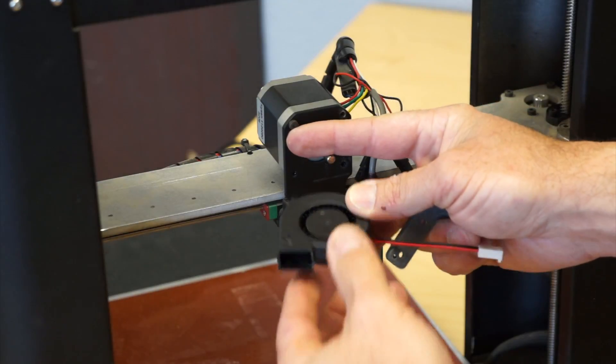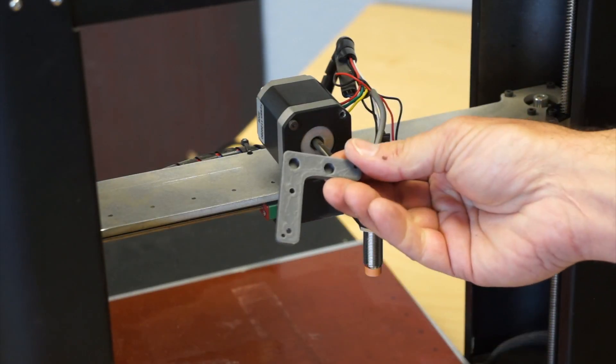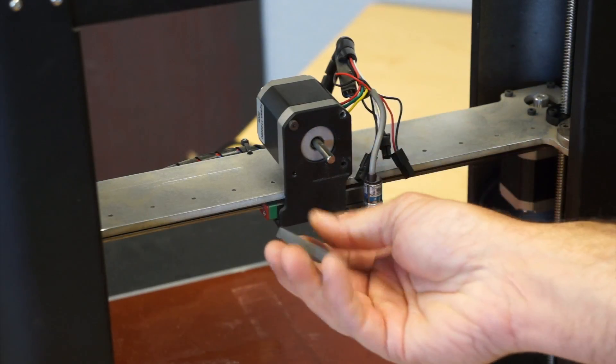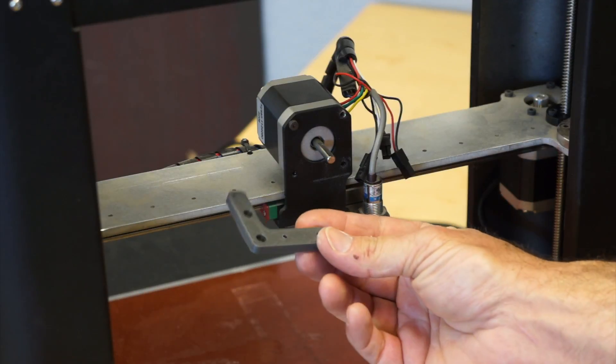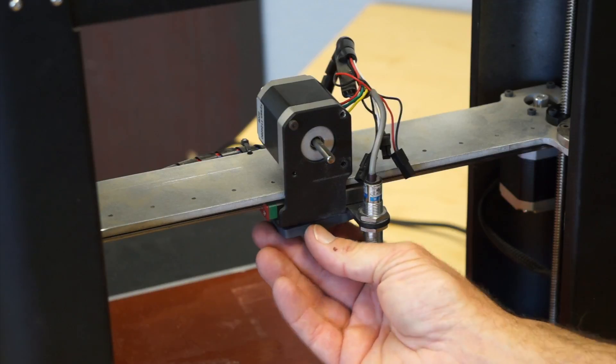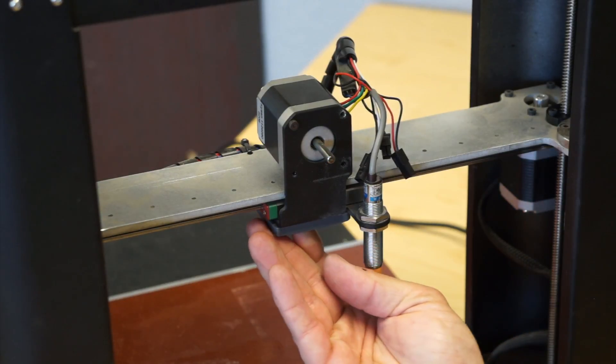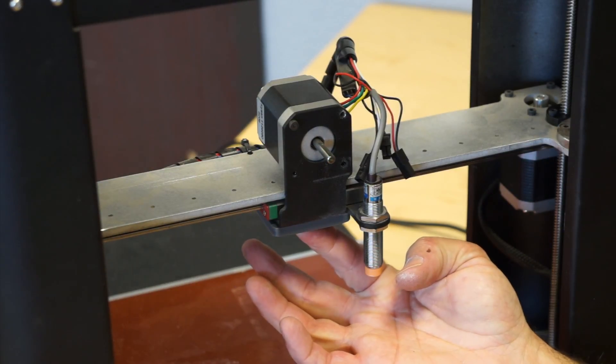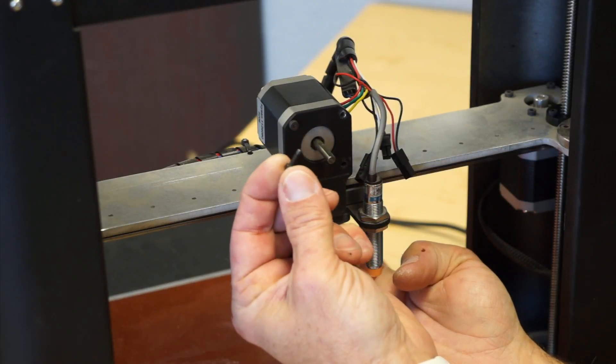Right now I need to get this mount on there. So this mount actually goes on like this and it locks into two existing screws under there like that. You've got a couple of screws - they're kind of short, so I'm going to put those in now.